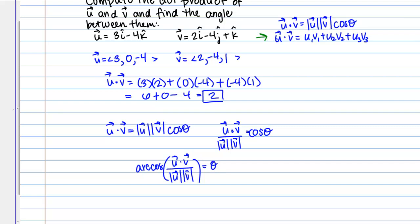So we already know what u dot v is. We just computed that as 2. But we need to know what the magnitude of u and the magnitude of v are to finish computing theta. So out to the side here, let's just go ahead and compute those. So magnitude of u, I'm looking back up here where I have my components. So it's going to be the square root of 3 squared plus 0 squared plus negative 4 squared. So that's the square root of 9 plus 16. So that's the square root of 25, which is 5.